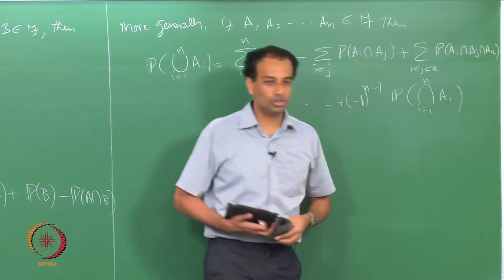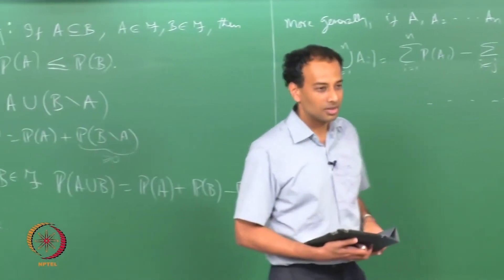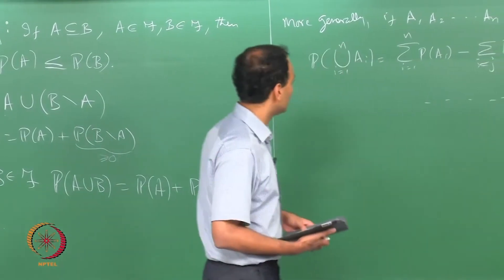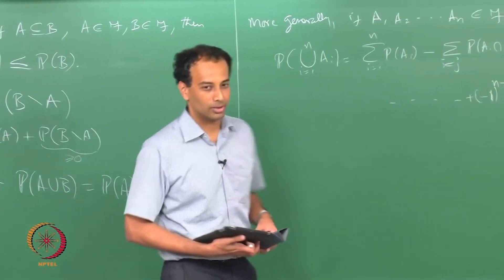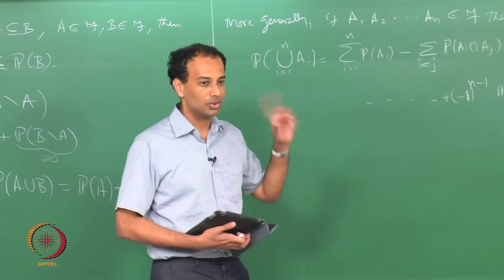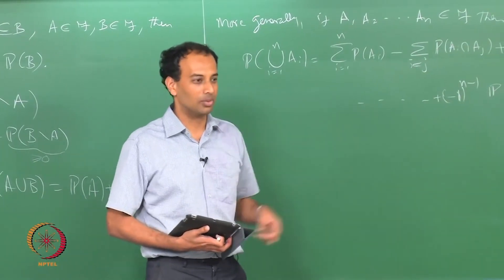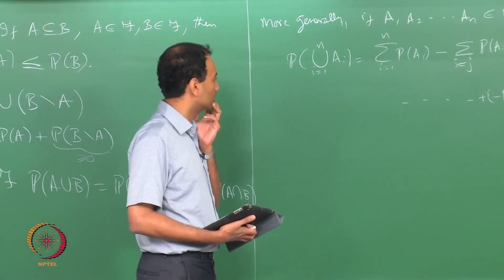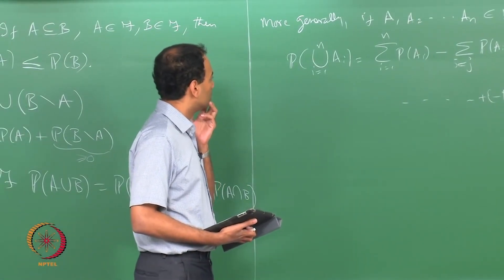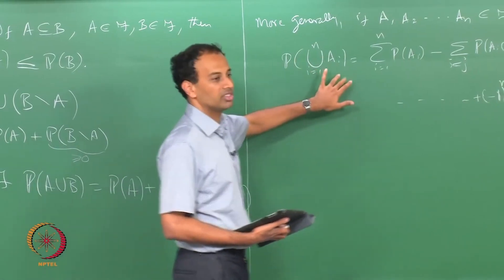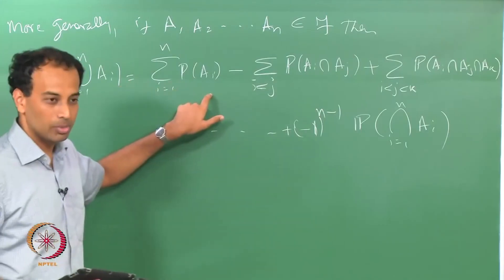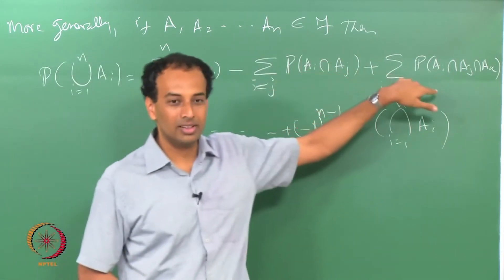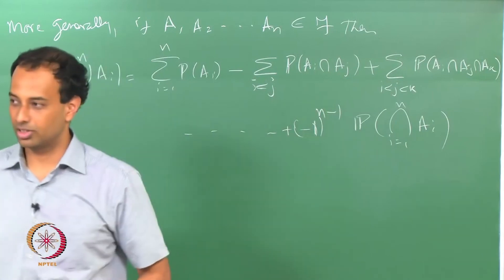This rule is called the inclusion-exclusion rule, or inclusion-exclusion formula, because you keep including more and excluding some. For example, for the probability of A union B union C, you take the sum of the three probabilities, subtract the three choose two pairwise intersection terms, and add the three-way intersection.